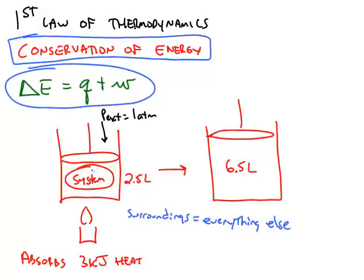So it's easier to see with an example. In this case, we have our system, which is a gas inside a cylinder. Everything else is called the surroundings. If we heat up the cylinder, the gas will absorb that heat, and it will increase its volume from 2.5 liters to 6.5 liters. What's pushing against the gas is a constant external pressure, which in this case has a value of 1 atmosphere.